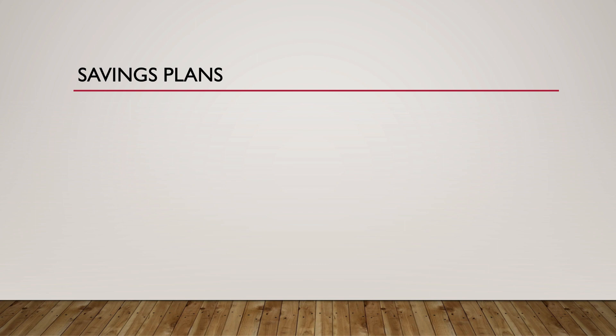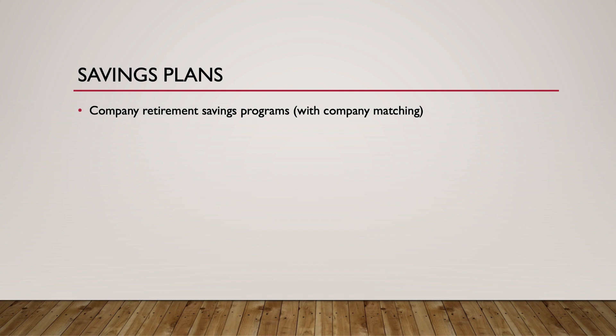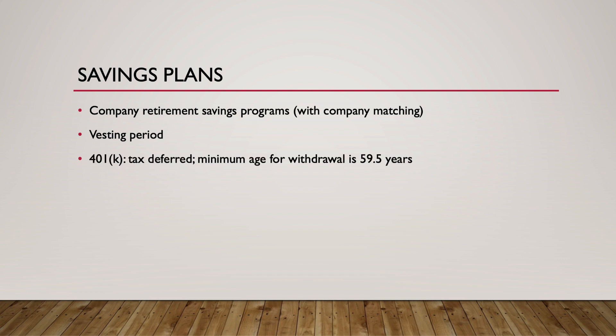Now let's discuss several retirement savings plans. Participating in company retirement plans can lead to a more comfortable future. Most company retirement savings programs allow or perhaps require employees to contribute a certain percentage of their wage earnings into a retirement account. Many employers will offer partial, full, or sometimes exceed full matching. In many cases, an employee must satisfy the vesting period — a minimum number of years a worker must be employed before the company's contribution to a retirement account becomes permanent — in order to keep employer retirement contributions. A 401(k) is tax-deferred, meaning that an employee does not pay income tax on the contributed amount until the money is eventually withdrawn. The minimum age for withdrawing from a 401(k) is 59 and a half years, and early withdrawal comes with a 10% early withdrawal fee.